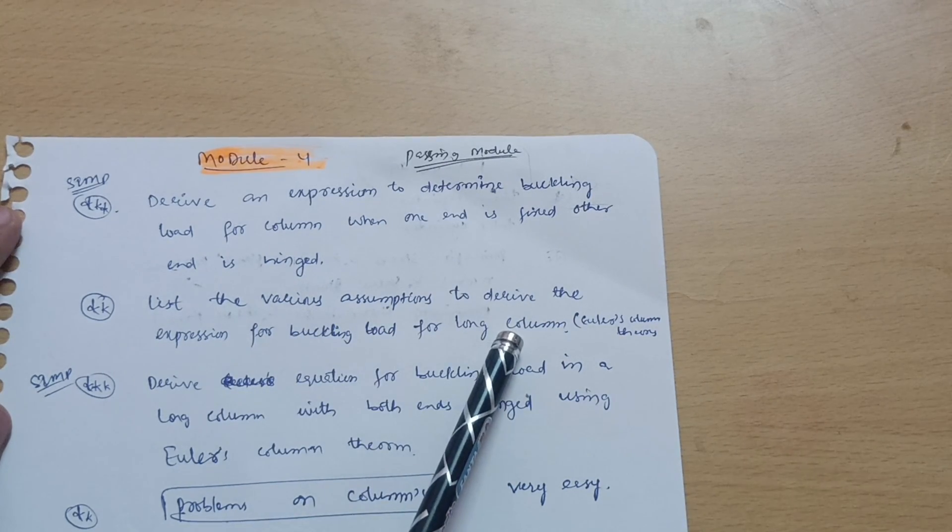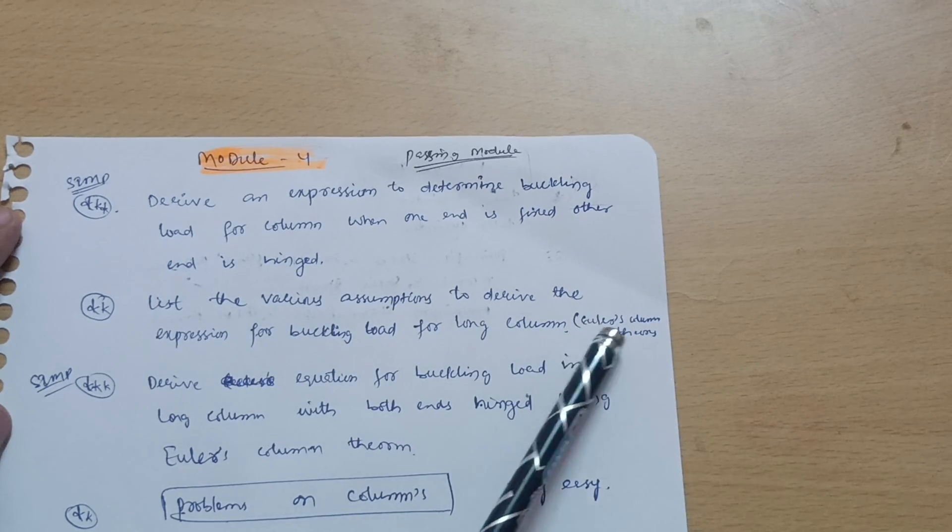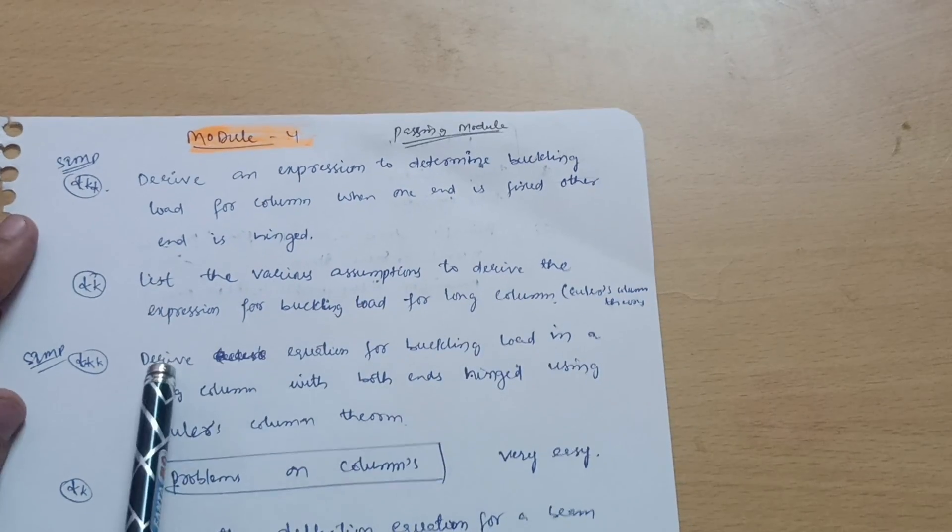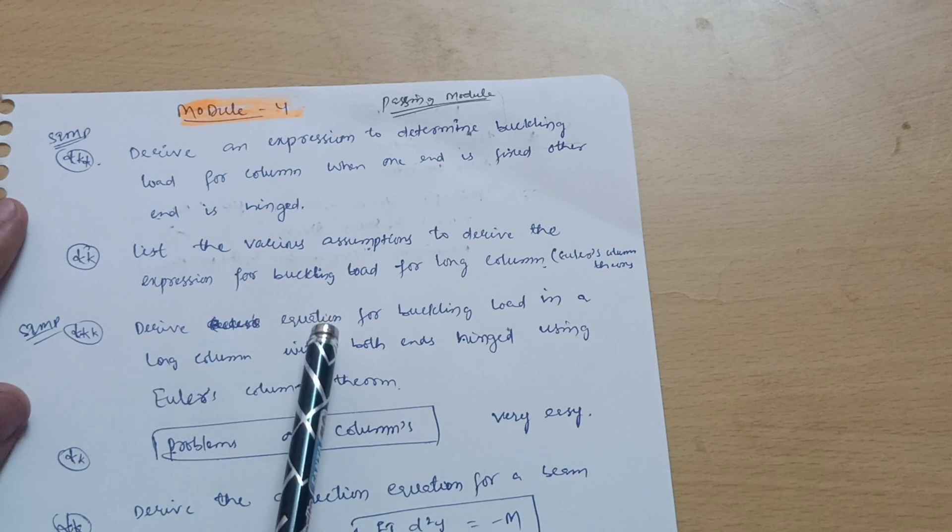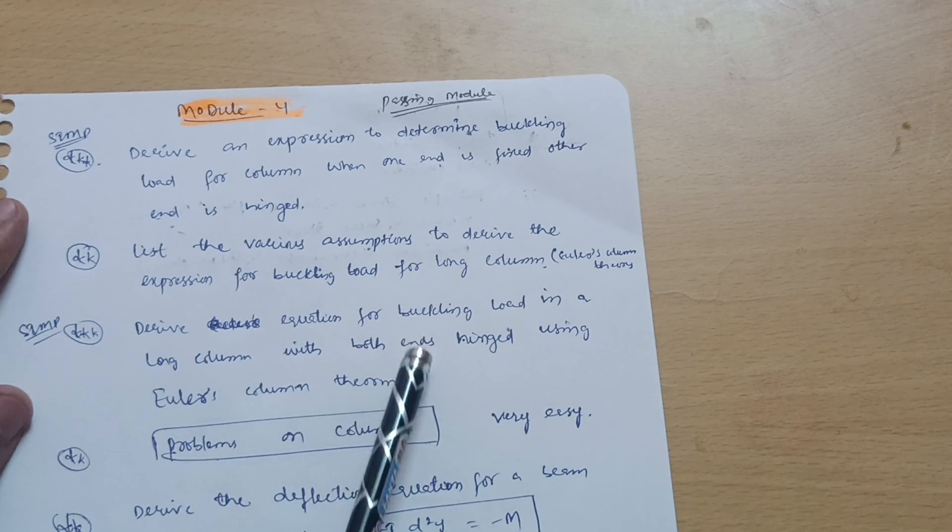Or simply they will ask you various assumptions of Euler's column theory. Next is super important one: derive an equation for buckling load in a long column with both ends hinged using Euler's column theory.